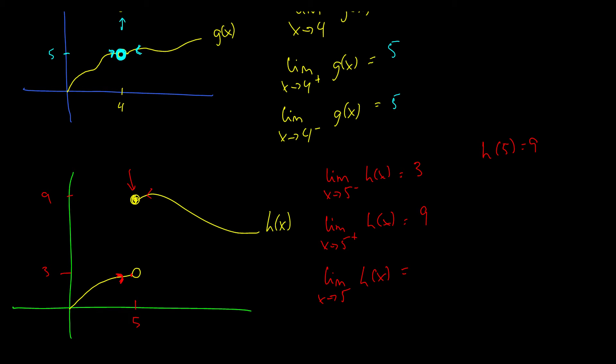So what is the limit as x approaches five of h of x? Well, like the example before, we take a look at the limit from the left and the limit from the right, which is three and nine, which are not the same. So this limit simply does not exist.